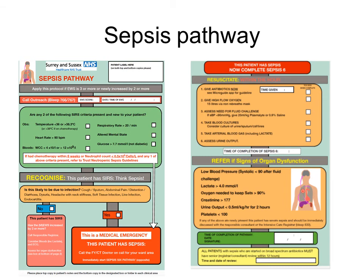If your patient has a NEWS score of 5 or more, please complete the sepsis pathway. If you identify 2 or more SIRS criteria and have a suspected source of infection, then your patient is septic. Please inform the responsible doctors in hours, or the on-call team out of hours.